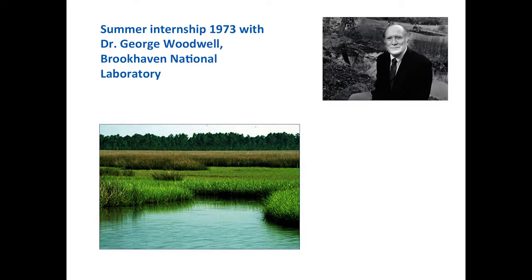After his junior year Bob wasn't sure whether to be a political science or biology major, whether to be a scientist or a lawyer. He got an internship with George Woodwell at Brookhaven National Lab, working on a salt marsh project in summer 1973. Woodwell was one of the very first ecologists talking about climate change, writing about it extensively by 1973, including the role of Amazon deforestation alongside fossil fuel use. Woodwell became a lifelong role model — a world-class scientist who believed in using science to advocate for environmental protection.